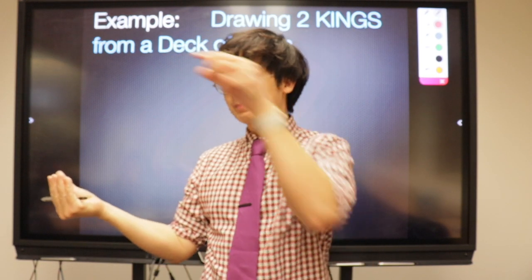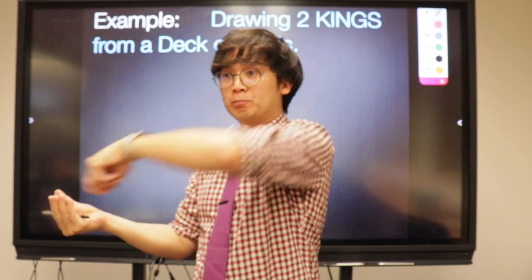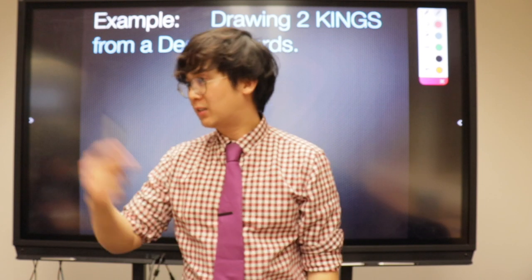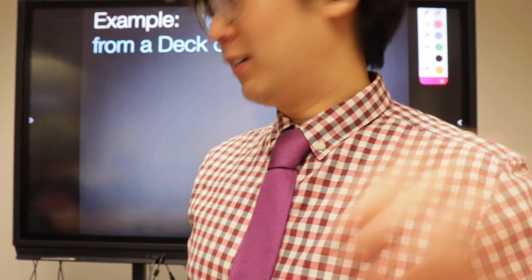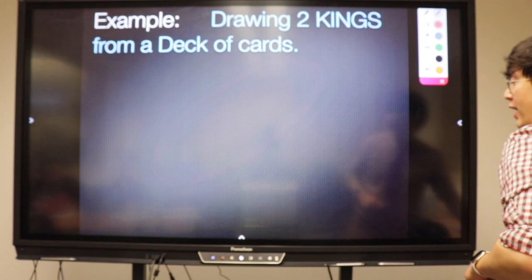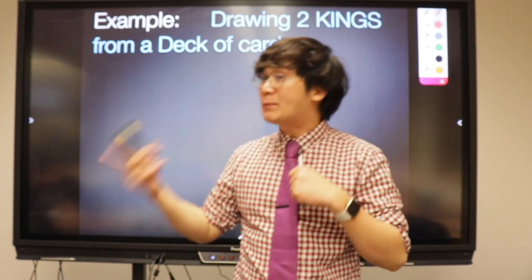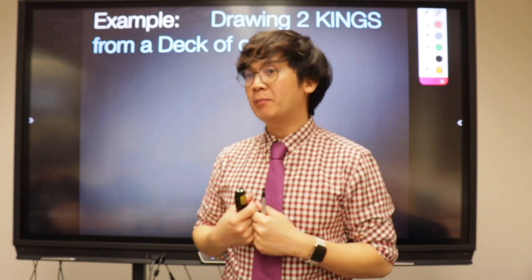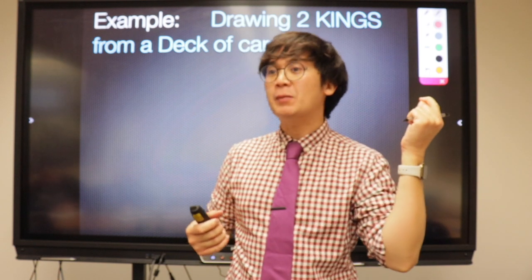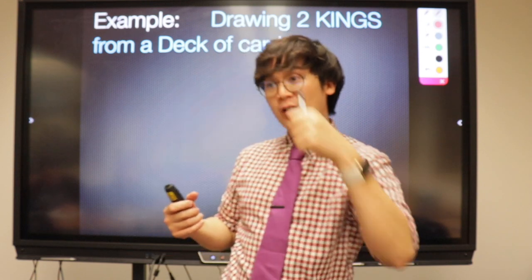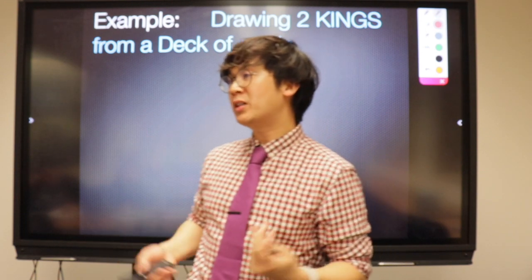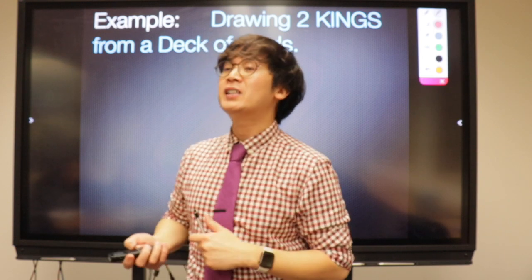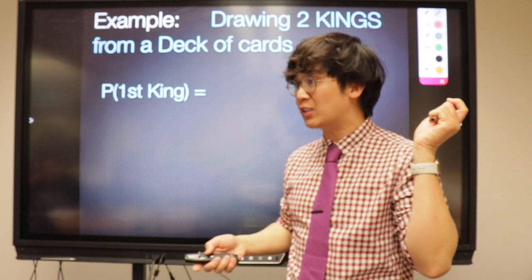You pick two cards from a standard deck and they're both kings. Give me the probability of that happening. Is this a dependent or independent event? It's dependent, because the second card you're going to pick is dependent on the first card you picked. The sample space is going to change.